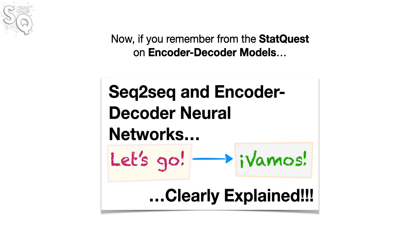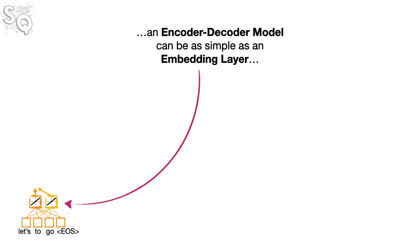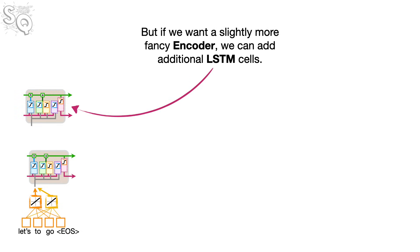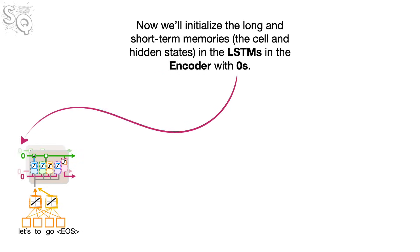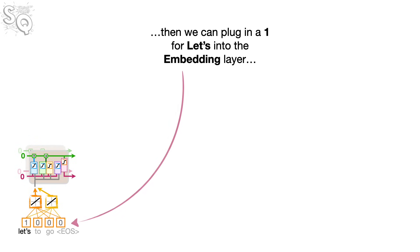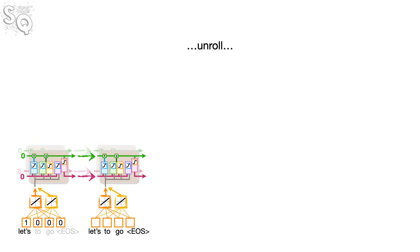Now, if you remember from the stat quest on encoder-decoder models, an encoder-decoder model can be as simple as an embedding layer attached to a single long short-term memory unit. But if we want a slightly more fancy encoder, we can add additional LSTM cells. Now we'll initialize the long and short-term memories, the cell and hidden states, in the LSTMs in the encoder with zeros. And if our input sentence, which we want to translate into Spanish, is let's go, then we can plug in a one for let's into the embedding layer, unroll, and plug a one for go into the embedding layer.